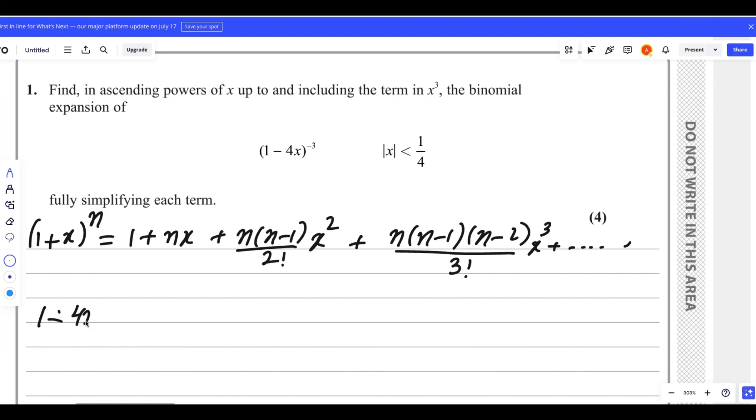So it is (1-4x)^(-3) and we will use the same formula. We will write 1 here, then nx where n is -3, so it is -3(-4x).